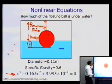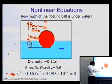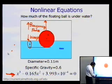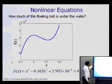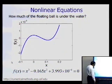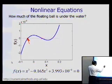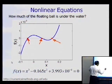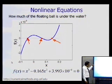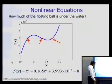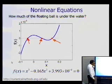Using Archimedes' principle — that the weight of the ball equals the weight of the water displaced — you eventually arrive at the cubic equation shown here. If we plot the left-hand side of this equation, we find three roots, because a cubic equation yields three roots. There may be three real roots, as in this case, or two complex roots and one real root.